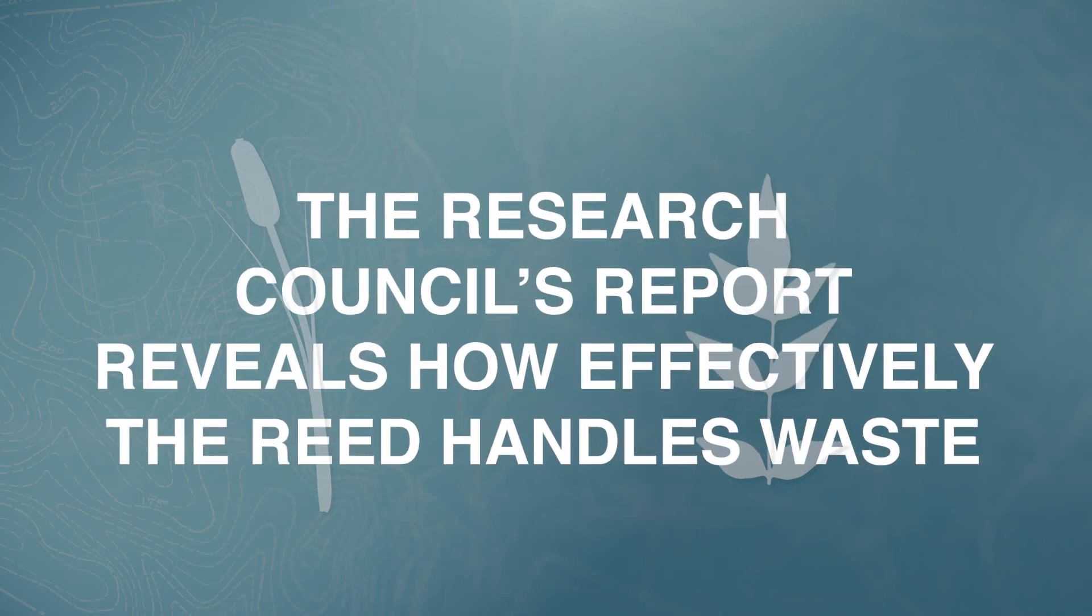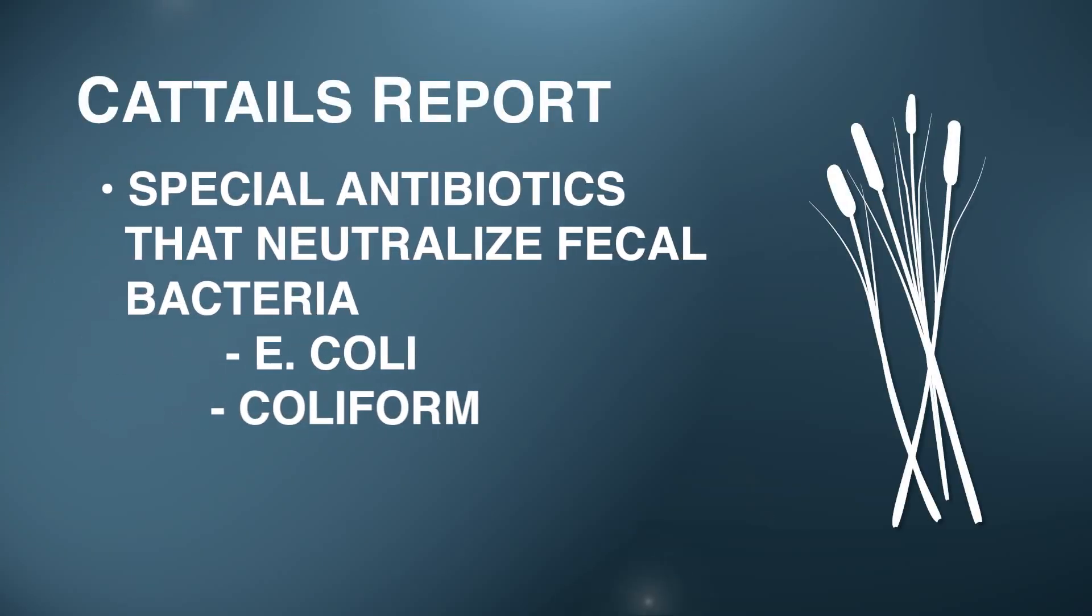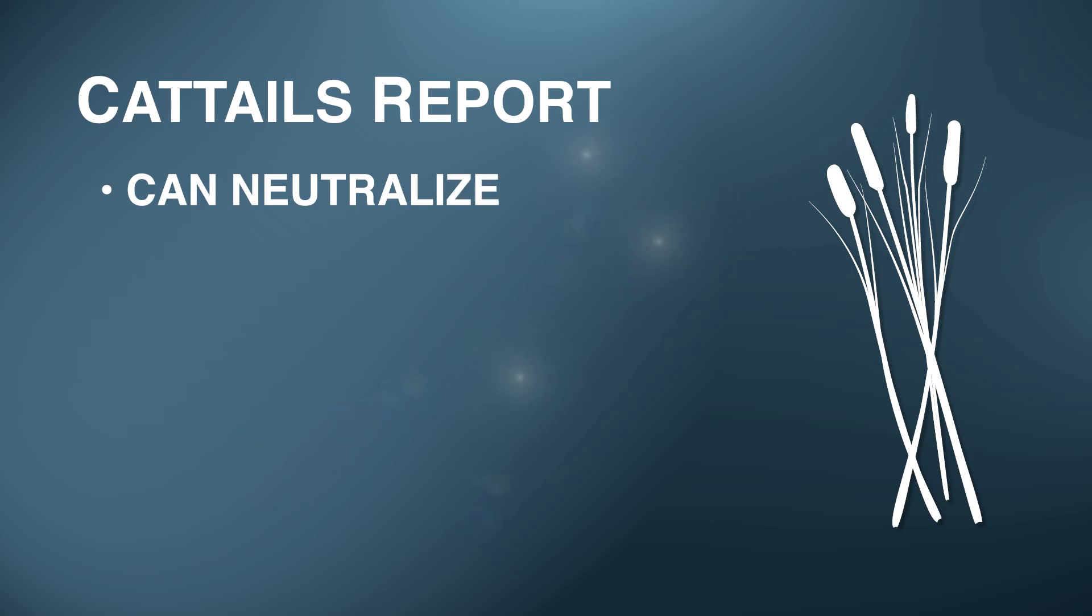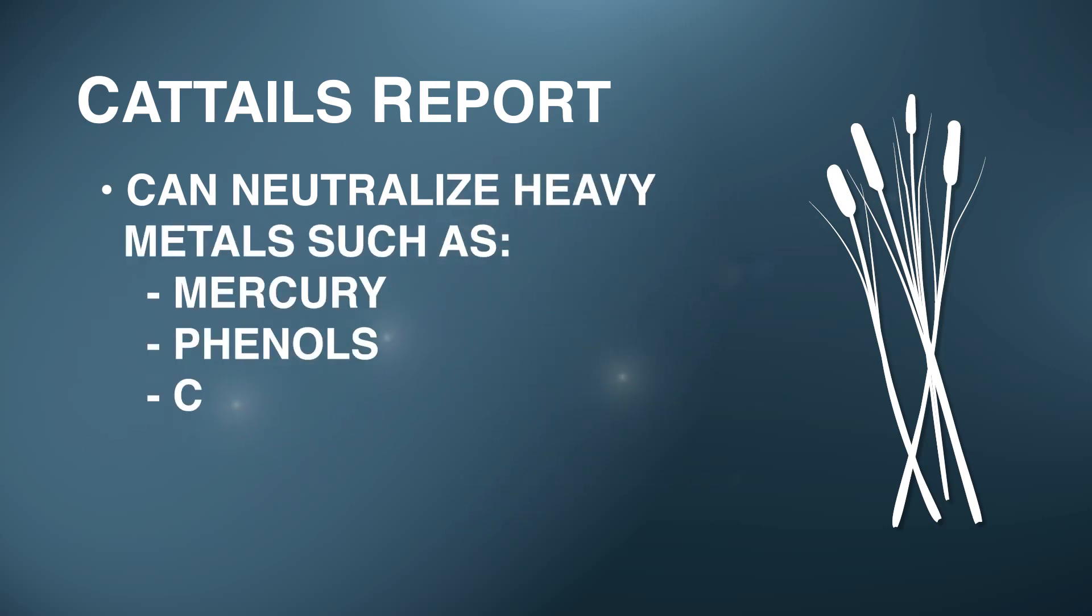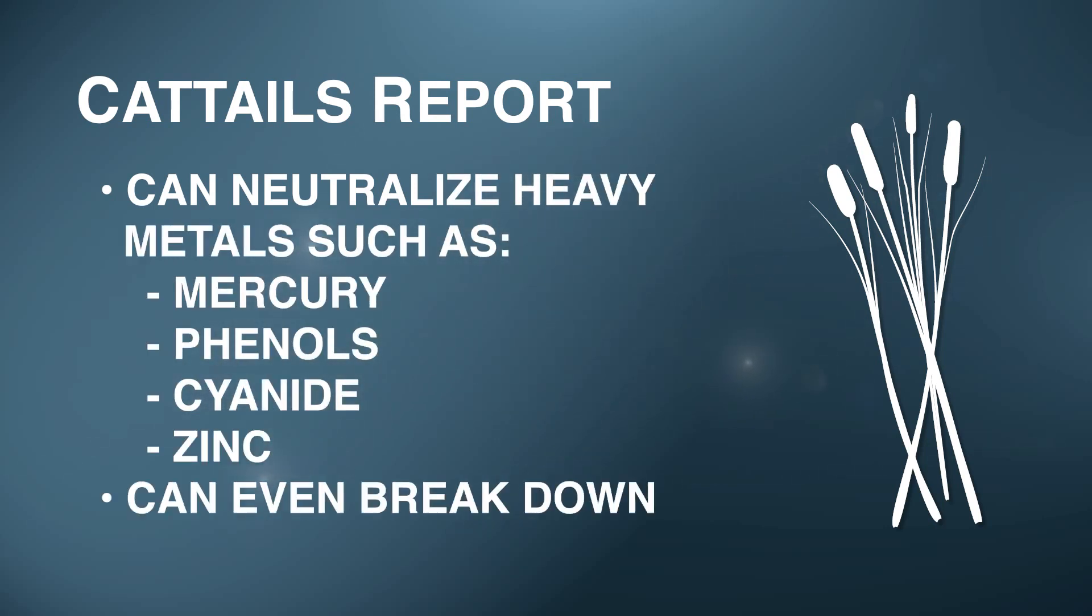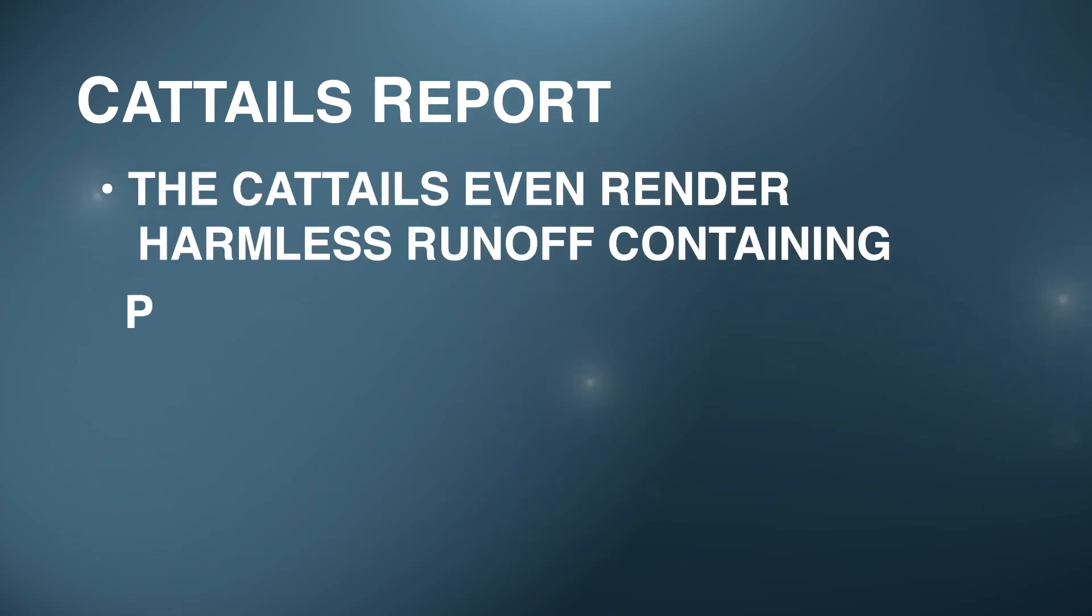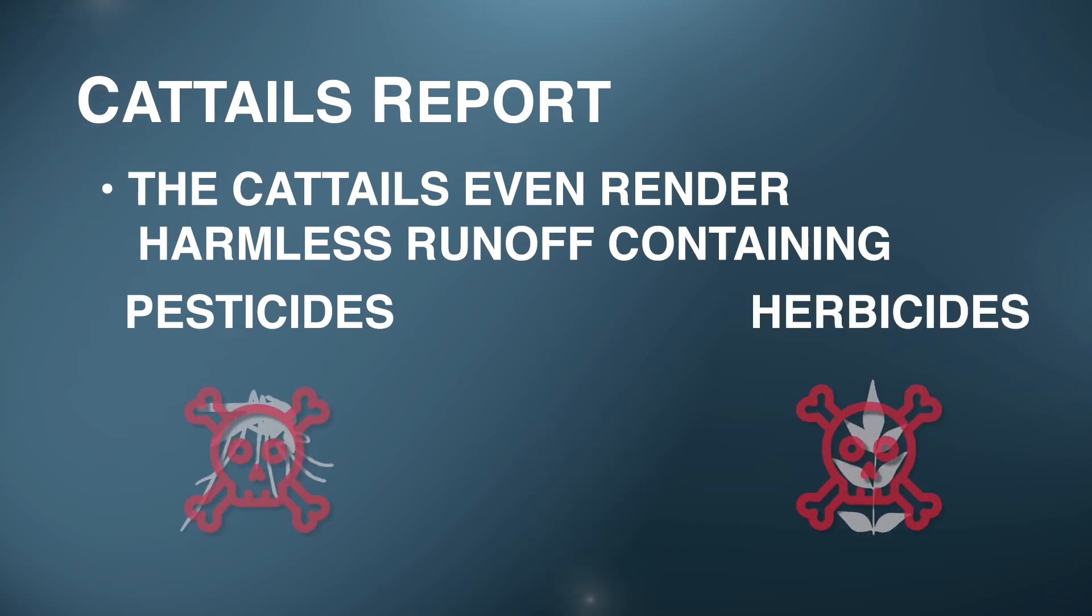The Research Council's report reveals how effectively the reed handles waste. It identifies, for instance, the special antibiotic secretions released by the cattail that neutralize fecal bacteria, including E. coli and coliform. The absorption and neutralization of dangerous chemicals was noted. The report explains, the plants can even fix heavy metals such as mercury, phenol, cyanide, zinc, and break down hydrogen sulfide. They were observed to even render harmless runoff containing pesticides and herbicides.